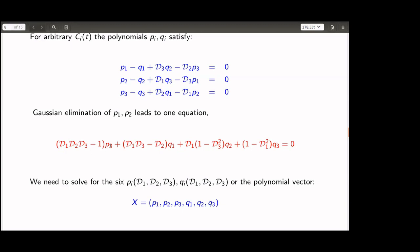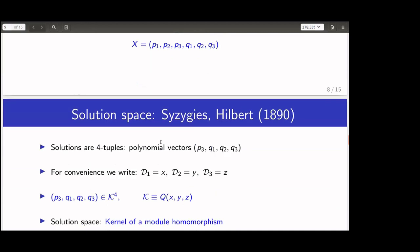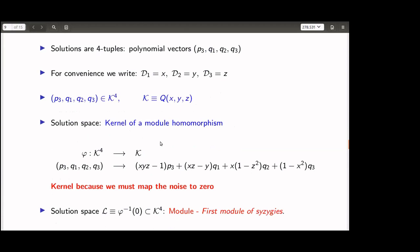The polynomials D₁, D₂, D₃, (−1), etc., form an ideal, and we look for solutions (p₃, q₁, q₂, q₃) satisfying this. We need a polynomial four-tuple. Writing D₁ = x, D₂ = y, D₃ = z, we have (p₃, q₁, q₂, q₃) ∈ K⁴, where K is the polynomial ring ℚ[x,y,z] over the rationals. This is a free module over this ring.